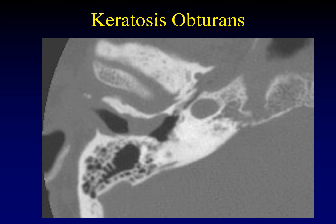Keratosis obterans is an unusual and odd diagnosis. Here we have keratinaceous debris that completely fills the external auditory canal — almost always the medial portion abutting the tympanic membrane. The tympanic membrane forms a border between the soft tissue of the keratosis and the gas that is normal in the middle ear cavity. Complete occlusion of the medial external auditory canal is the key finding, with no erosions of any of the walls. Interestingly, this disease looks histopathologically just like a cholesteatoma, so we can help pathology by indicating there are no erosions — it's probably keratosis rather than a cholesteatoma.